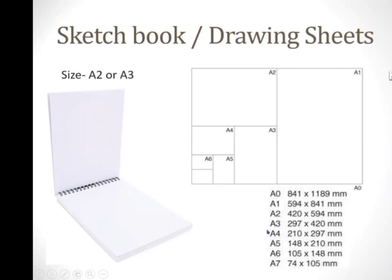For reference, all the sizes of sheets are mentioned here. A4 is the page size we use for printing or photocopying. A0 is the biggest size — if you fold it in half, you get size A1. Folding A1 in half gives A2, and folding A2 in half gives A3.